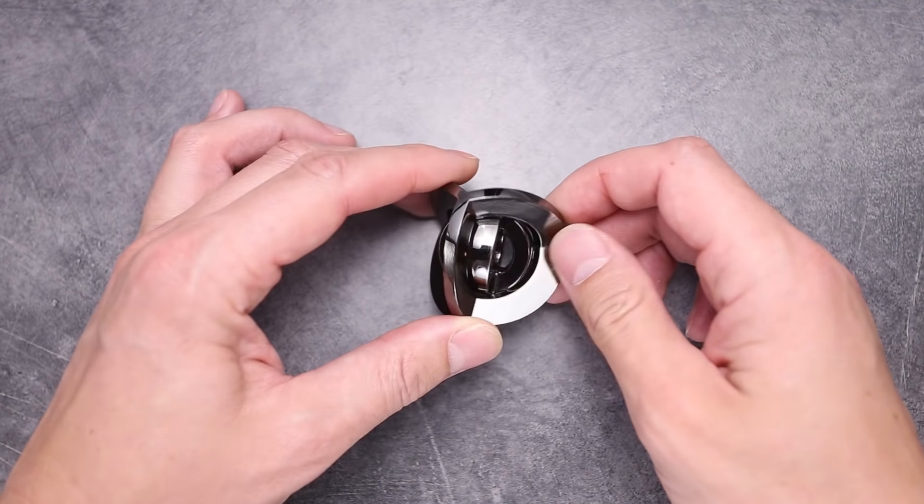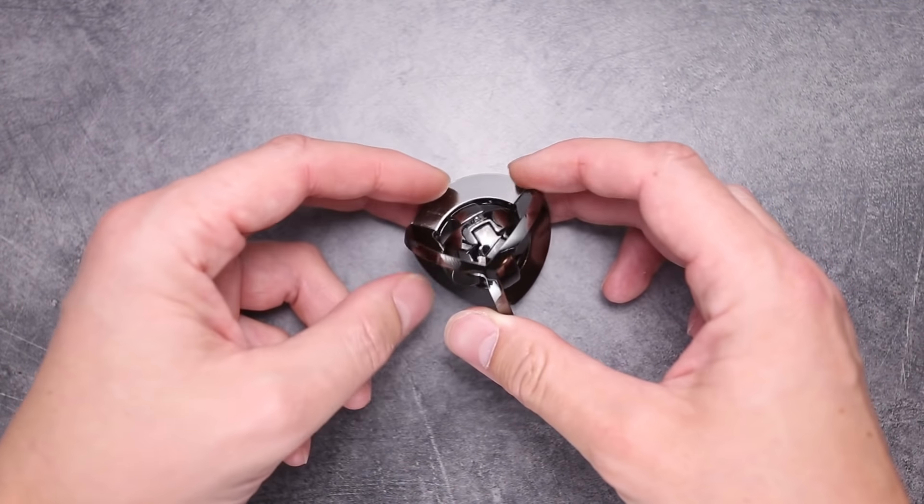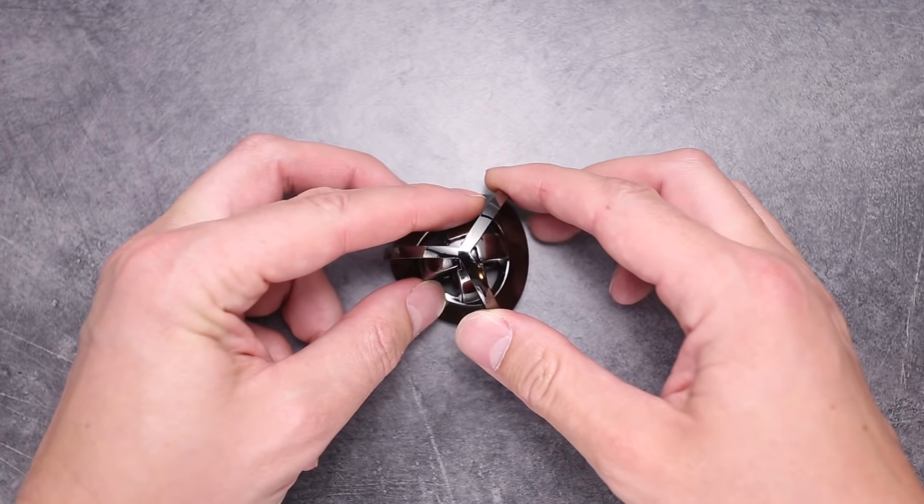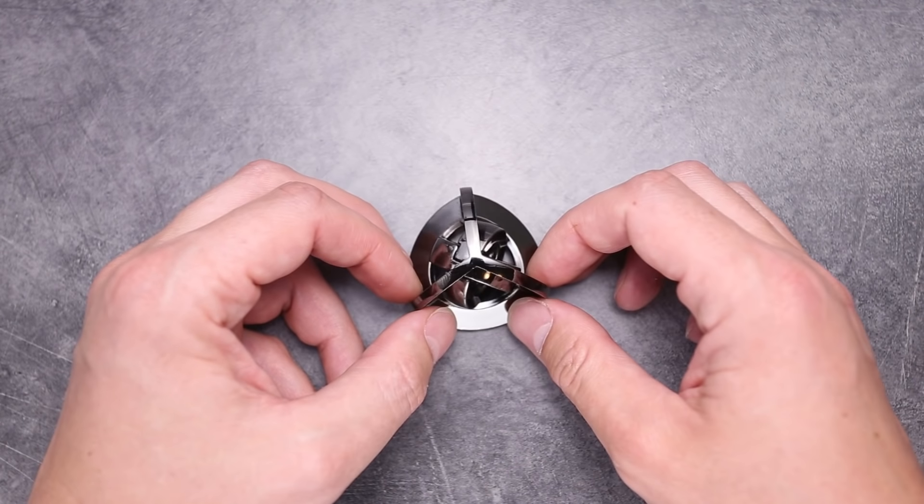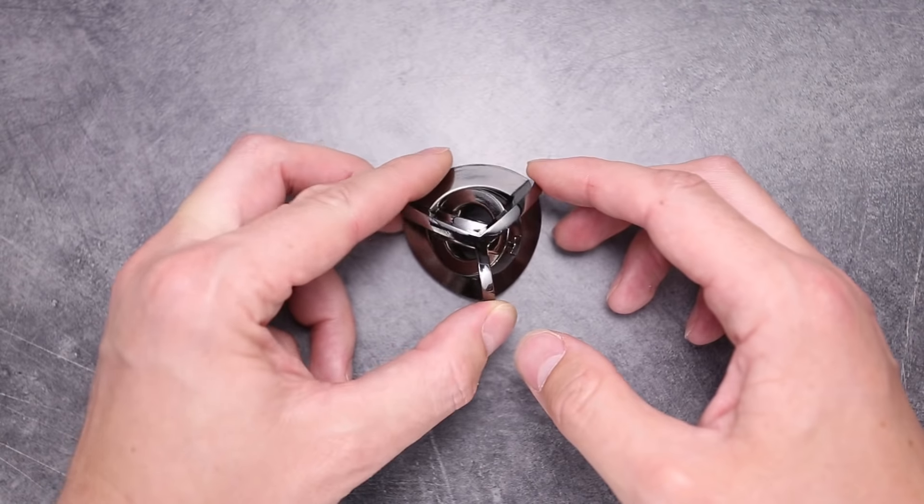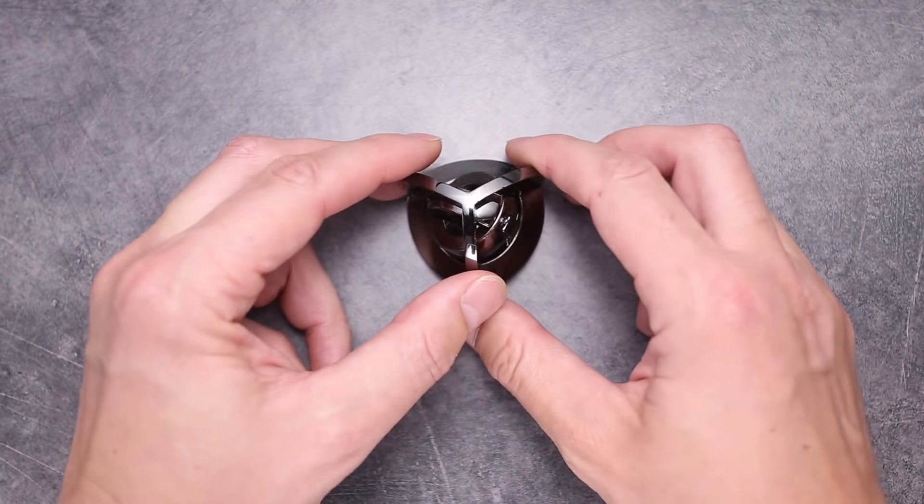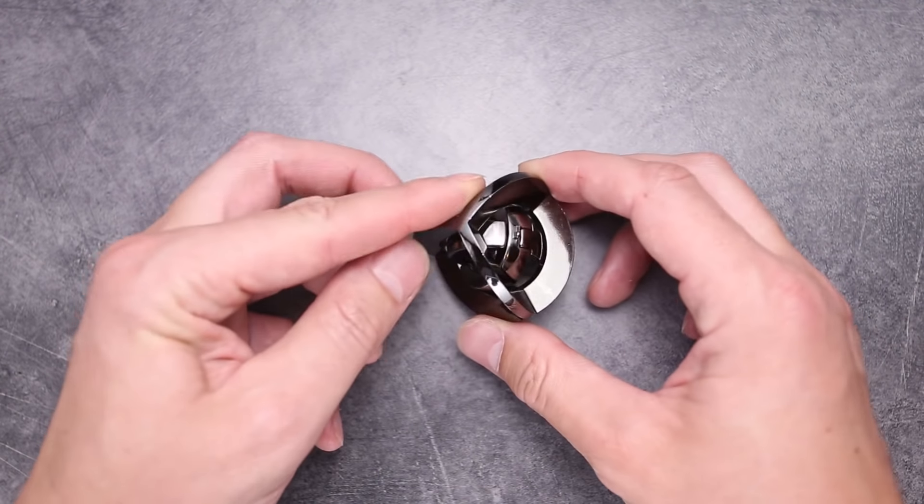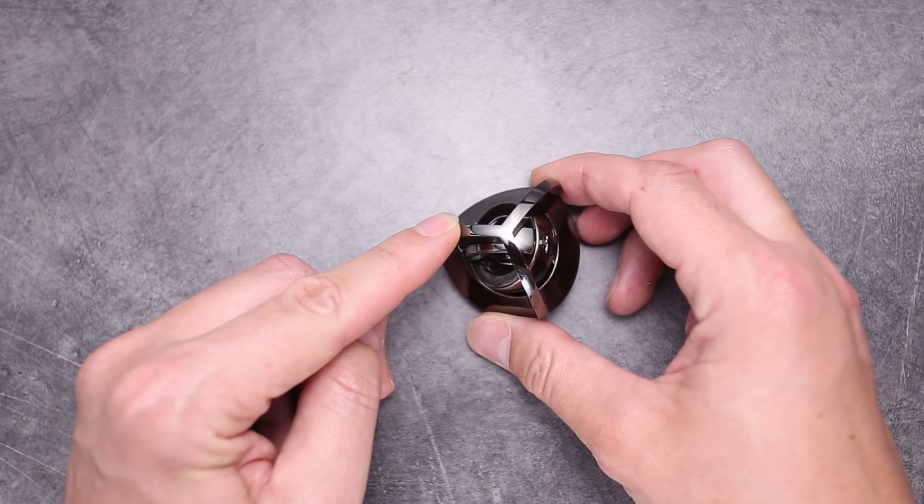As always, before showing the solution, we have to take a closer look at each part. First, we will see at the top of this outer part. As you can see, it consists of six edges.